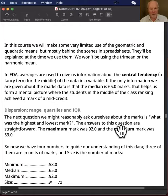If the only information we were given about the marks data was that the median is 65 marks, that helps us form a mental picture: the students in the middle of the class ranking achieved a mid-credit. That's the kind of thinking I want to encourage you to do.